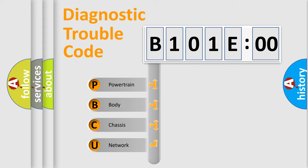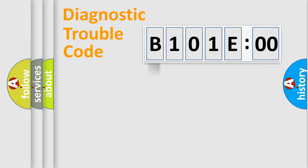We divide the electric system of an automobile into four basic units: Powertrain, Body, Chassis, and Network. This distribution is defined in the first character code.